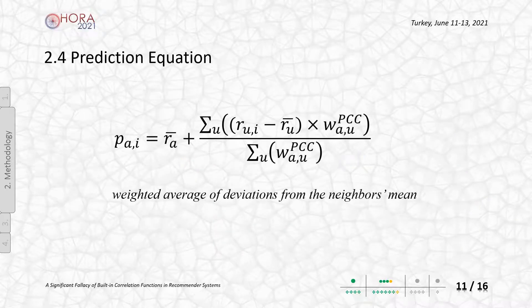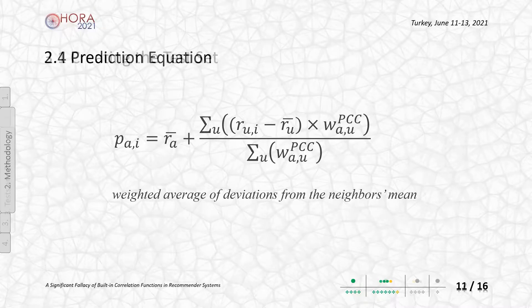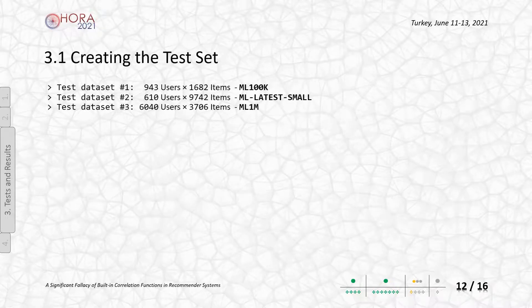Based on the best neighborhood, active user and selected neighbors are treated for the prediction operation. You can see the mean centering formula, as I briefly mentioned earlier. Also, as I said before, we utilize three MovieLens releases.